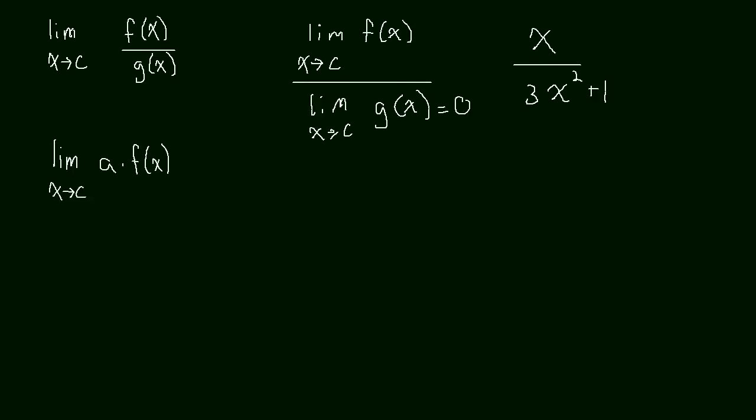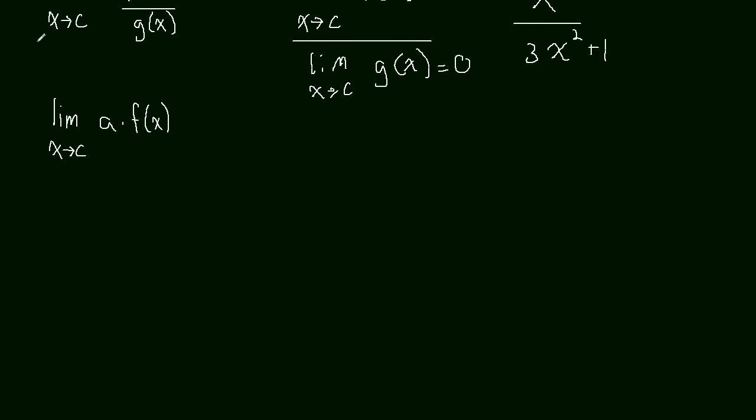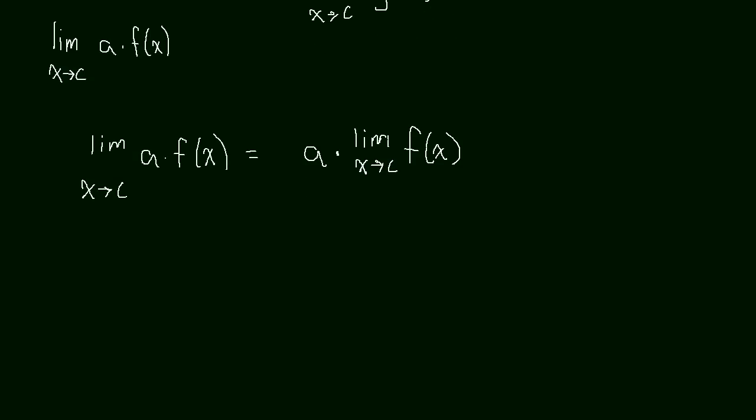Okay. And then finally, this last property, the limit as X approaches C of A times F of X. So I'm just rewriting this. This is equal to A times the limit as X approaches C of F of X. Meaning if you have a constant multiple, you can pull it outside of the limit. So let's take a look at that.